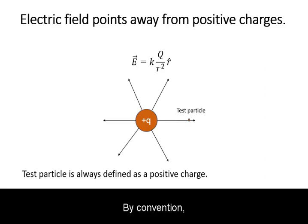By convention, the test particle is always positive. Hence, in predictive behavior, the direction of the electric field always points away from positive charges.